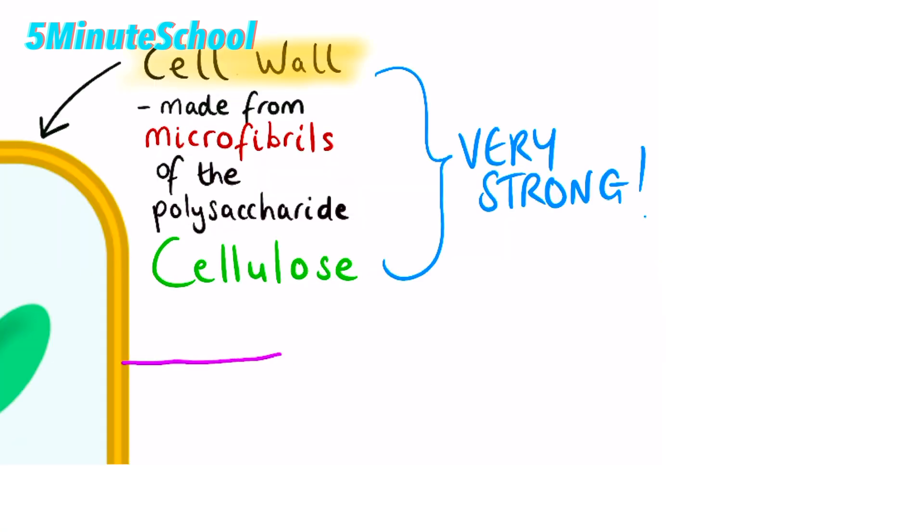A second feature of the cell wall is this middle layer which is called the middle lamella. This marks the boundary between the cell walls and it helps to stick one cell wall to the cell wall of an adjacent cell.